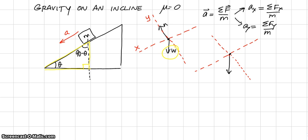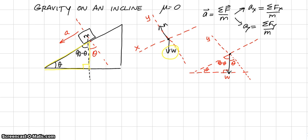How does that relate to our diagram? If I draw the horizontal on here, I have angle theta there and a 90-degree angle, so inside I have 90 minus theta. That means that between the vertical — which is where gravity points — and my y-axis, I actually have angle theta, which is the same angle as the incline makes with the horizontal. So this angle between the weight vector and the y-axis is theta.